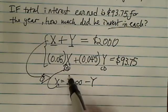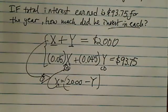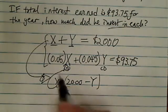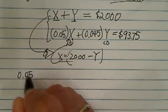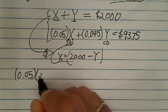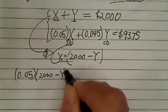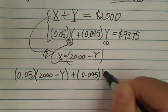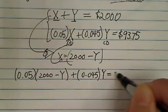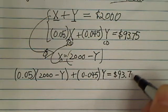So we're going to substitute, every time we see x, we're going to have it as 2,000 minus y. So the second equation becomes a little messier now. 0.05 times x is 2,000 minus y, plus 0.045 times y is equal to $93.75.